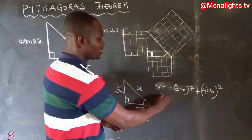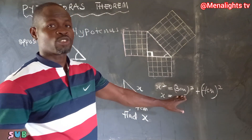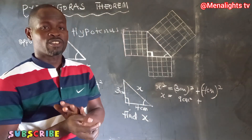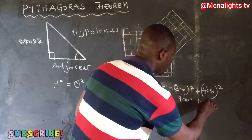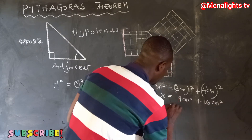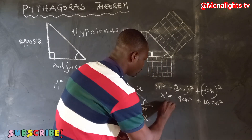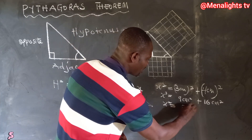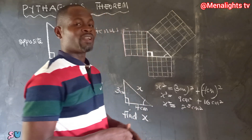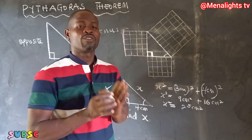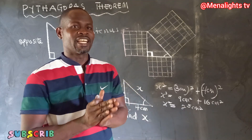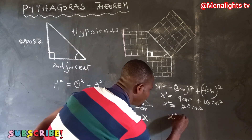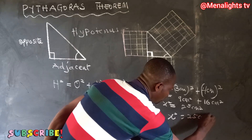That means x squared is equal to 3 cm squared plus 4 cm squared. So x squared equals 3 cm squared, which gives us 9 cm², plus 4 cm squared, which gives us 16 cm². Then 9 plus 16 gives us 25 cm². Since we are looking for x and not x squared, we need to find the square root, so x squared equals 25 cm².